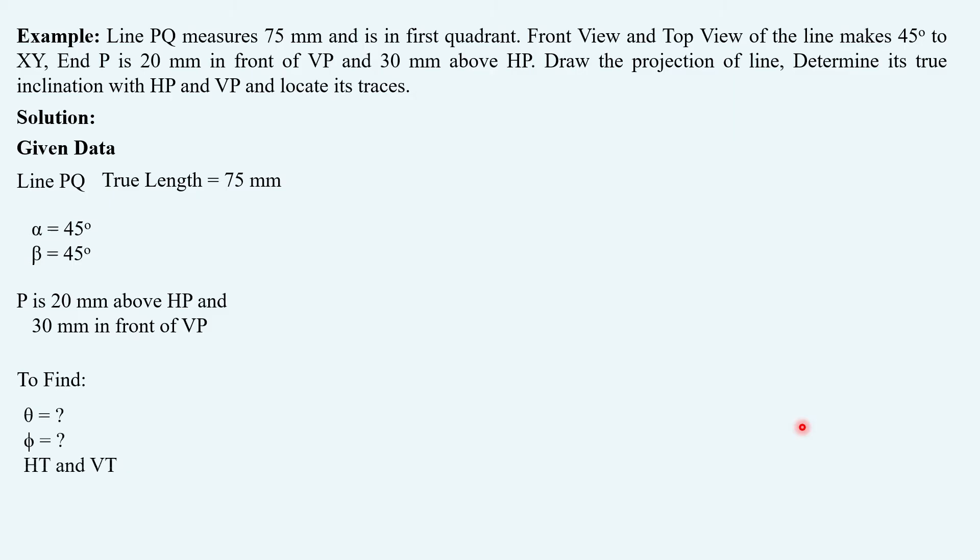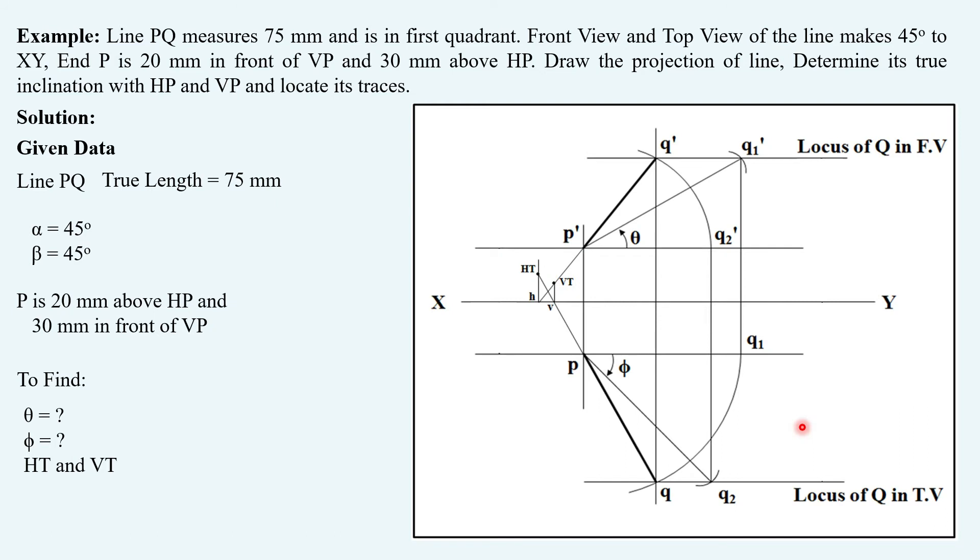What is required to be found? Theta, phi, and trace. Here is a typical solution in which we are going to compare the given data. Front view and top view angles are given to us, and the front view and top view position of end point P is also mentioned.